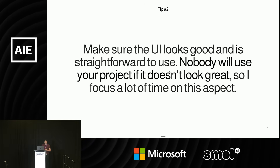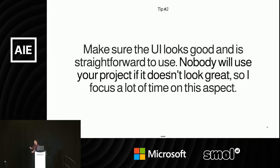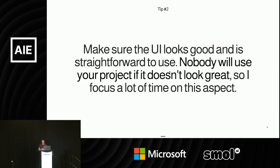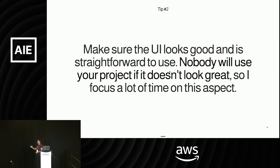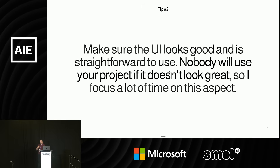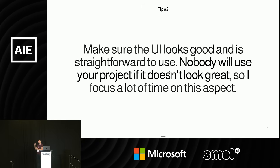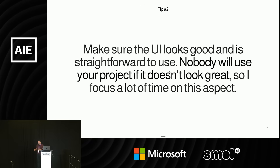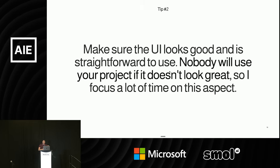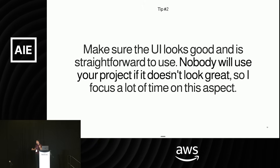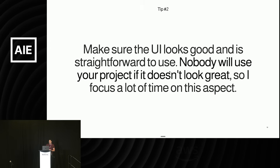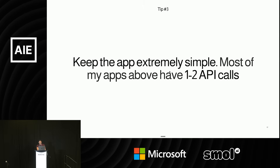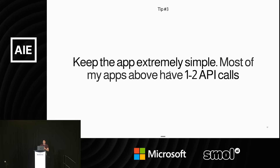Tip two, which is very underrated: make sure the UI looks good. A lot of the apps I showed you are AI apps but I actually spend 80% of the time on the UI. The first few apps I built looked really really bad and that was a big part of why nobody used them. I've learned that even if you take a really simple idea — like summarizing a PDF, which you can do in ChatGPT right now — I built a PDF summary app, spent a lot of time making it look really good, and had tens of thousands of people end up using it.